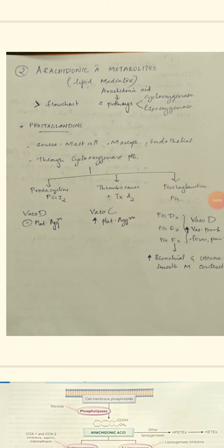Arachidonic acid metabolites are lipid mediators. Arachidonic acid is acted upon by two enzymes: cyclooxygenase and lipoxygenase. These form two pathways of arachidonic acid metabolism, the cyclooxygenase pathway and the lipoxygenase pathway.